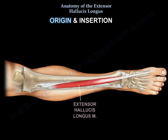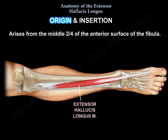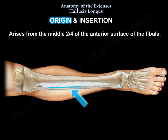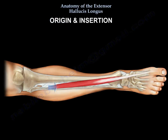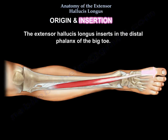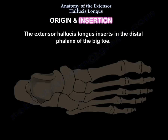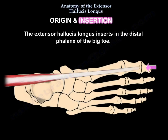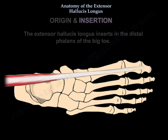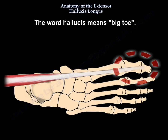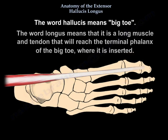Extensor hallucis longus origin is from the middle two-fourths of the anterior surface of the fibula. It inserts into the distal phalanx of the big toe. The word 'hallucis' means big toe, and 'longus' means it is a long muscle and tendon that reaches the terminal phalanx of the big toe where it gets inserted.